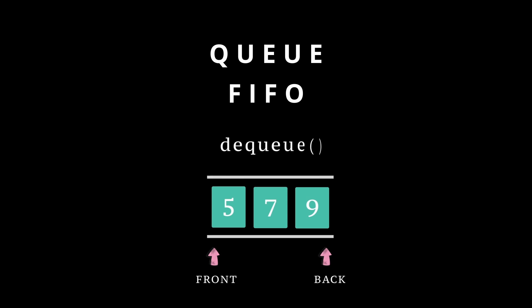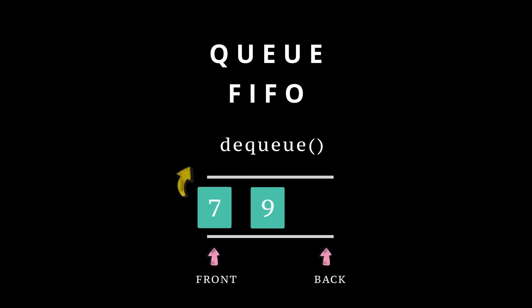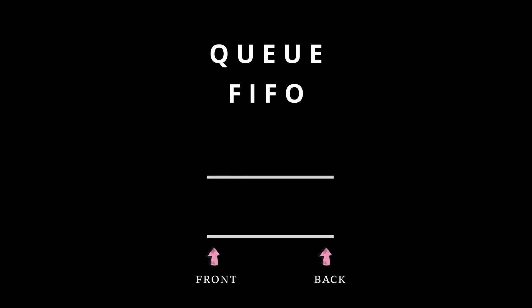Now to remove numbers from the queue, we call the dequeue function, which doesn't take any argument as it always removes the first element from the front of the queue. So in this queue, if we call dequeue, the first element at the front is 5, which will get removed. The remaining elements will adjust and number 7 will become the front. Calling dequeue again will remove number 7, and number 9 will become the front. Calling dequeue one more time will remove 9 and the queue will become empty.